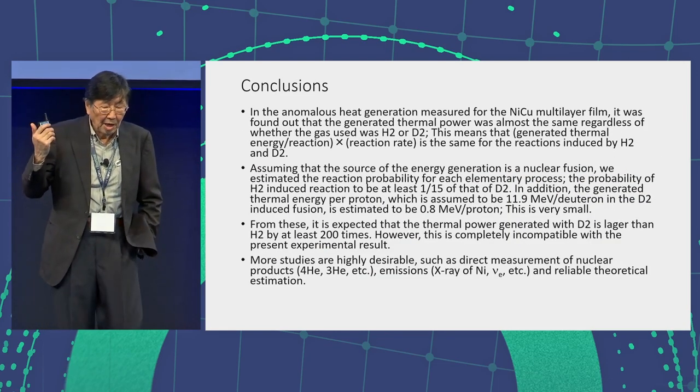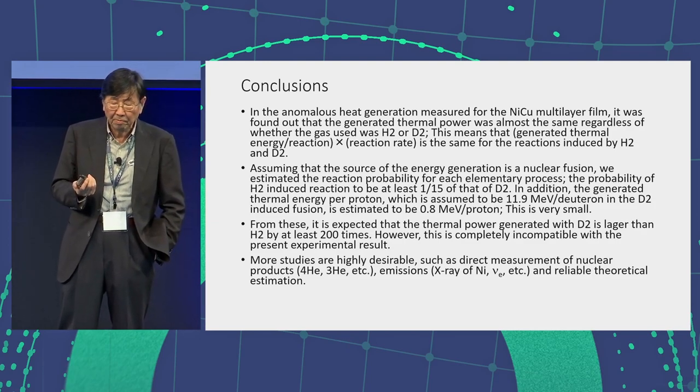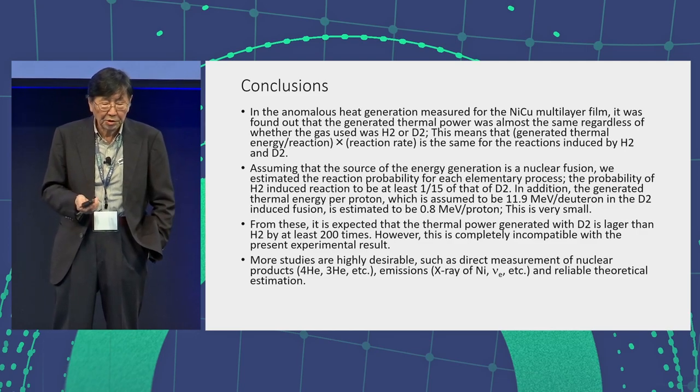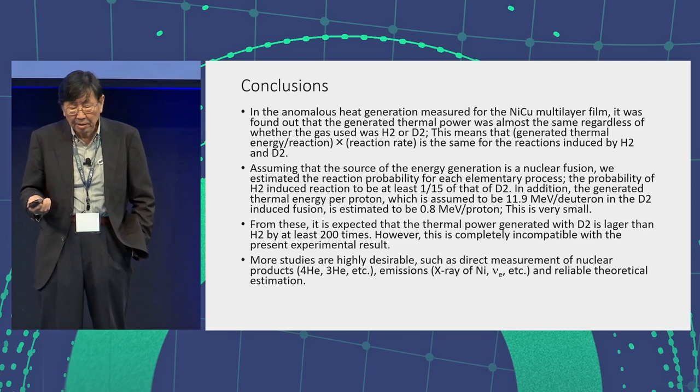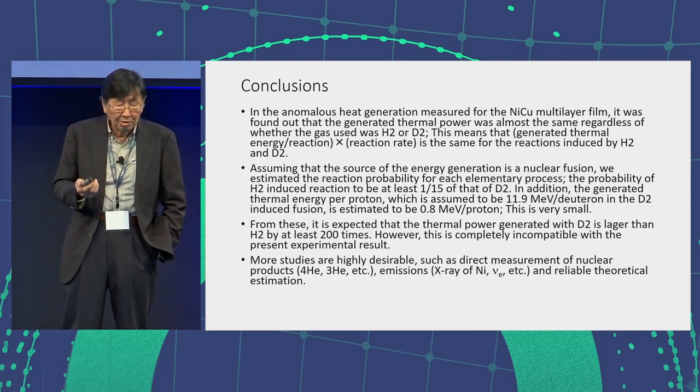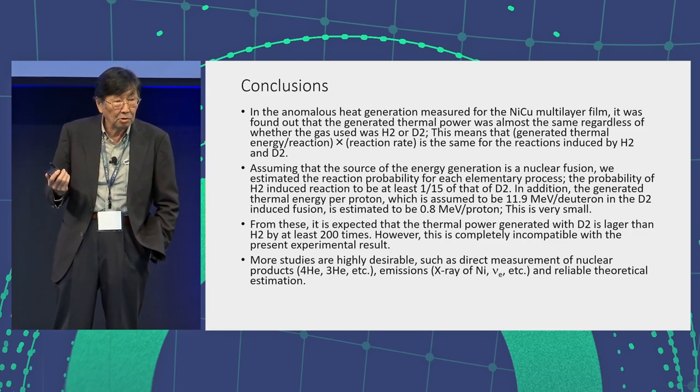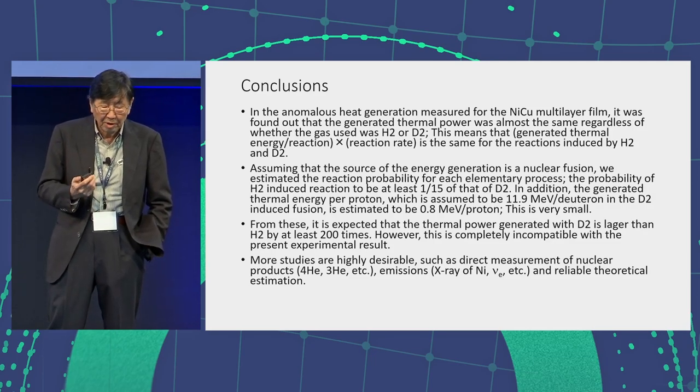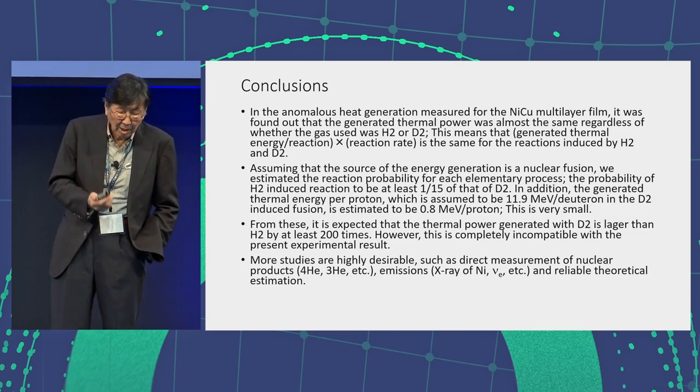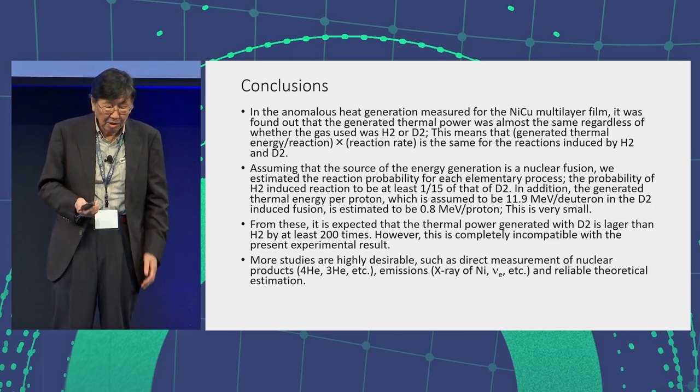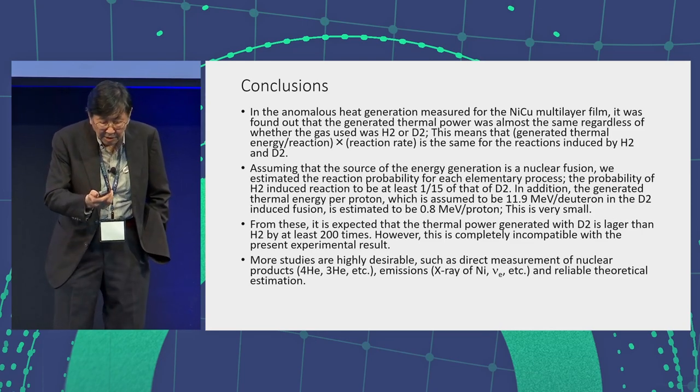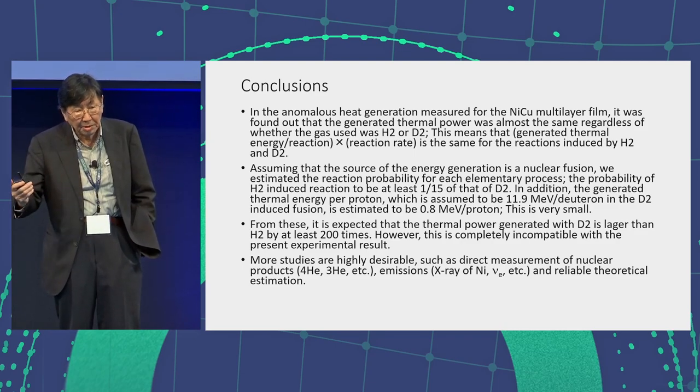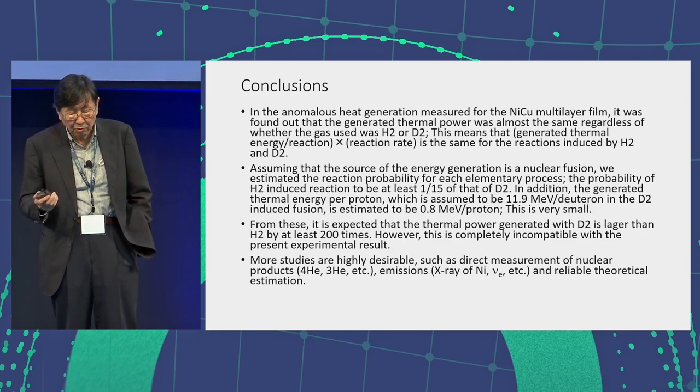Let me conclude. In the anomalous heat generation measured for the nickel-copper multilayer film, it was found that the generated thermal power was almost the same regardless of whether the gas used was hydrogen or deuterium. This means that generated thermal energy per reaction times reaction rate is the same for the reactions induced by hydrogen and deuterium. Assuming a source of energy generation is nuclear fusion, we estimate the reaction probability for each element type process. From these it is expected that thermal power generated with D2 is larger than H2 by at least 200 times. However, this is completely incompatible with the present experimental result.